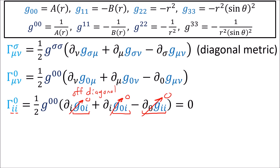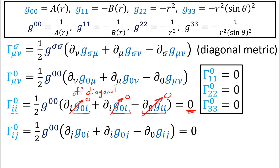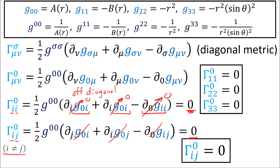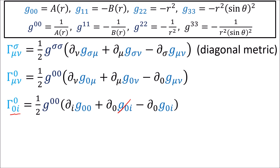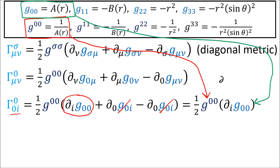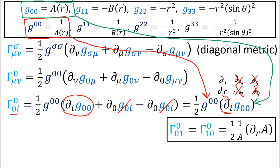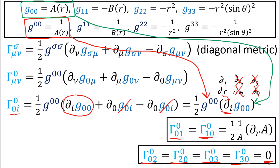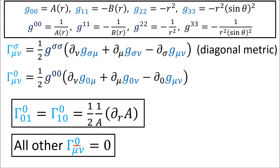For connection coefficients with 0 on top and 0,0 on the bottom, all time derivative terms go to zero since g00 doesn't depend on time. If both lower indices are the same spatial index i, the metric components are off-diagonal and therefore zero. In the case where one lower index is time and the other is spatial, g-inverse 00 is 1/a and g00 is just a. Since a(r) only depends on r, only the partial r term gives a non-zero result. So the lower 0,1 and 1,0 coefficients are non-zero, but 0,2 and 0,3 go to zero.